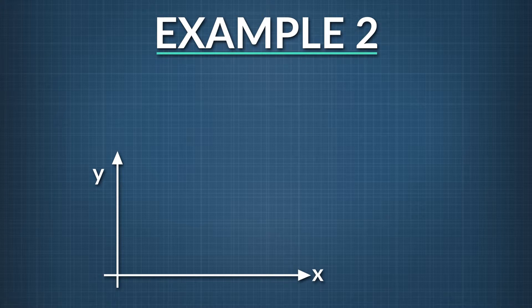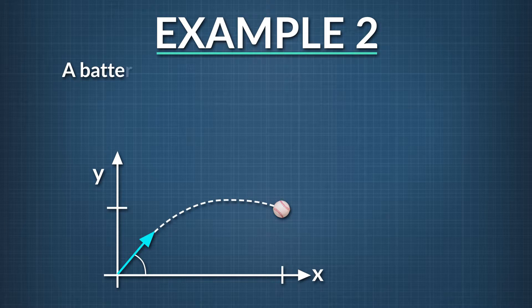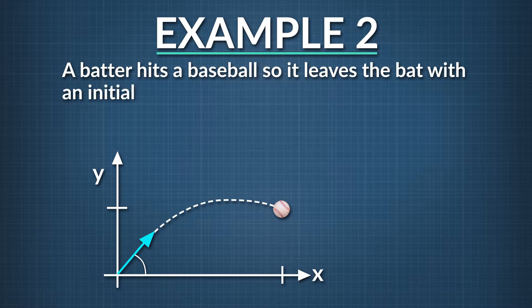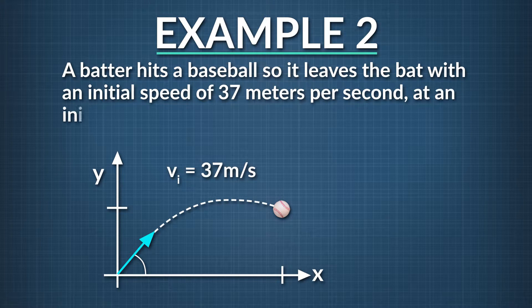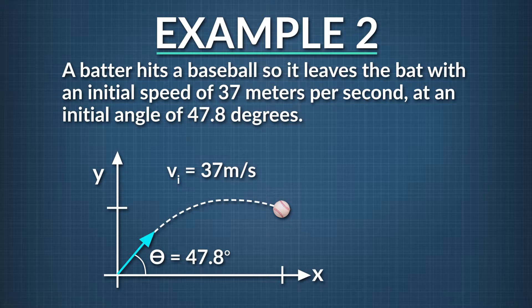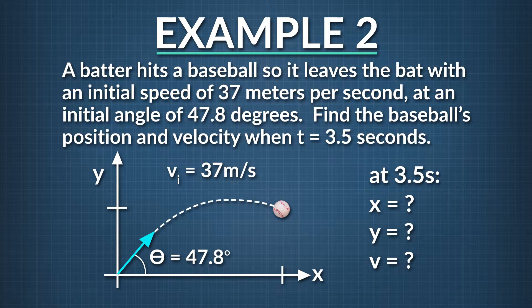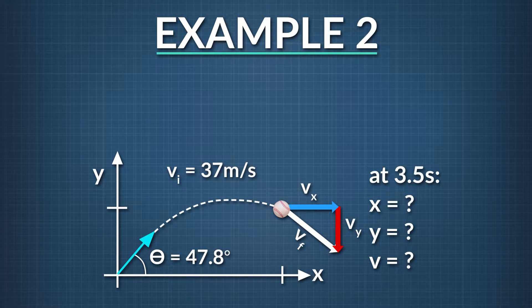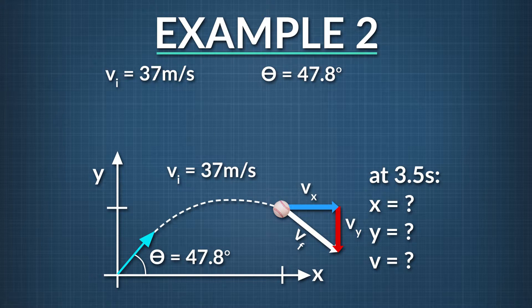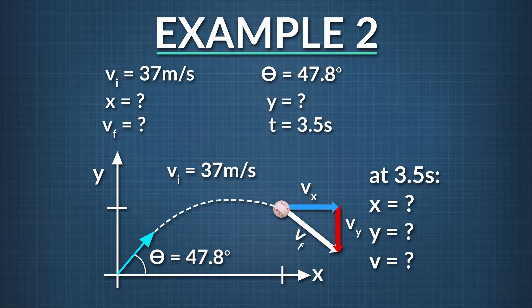The next problem involves solving for the position and velocity of the projectile after it has traveled for several seconds. A batter hits a baseball so it leaves the bat with an initial speed of 37 meters per second and at an initial angle of 47.8 degrees. Find the baseball position and velocity when t equals 3.5 seconds. As always with projectile motion problems, we write down what we're given and what to solve for. We know the initial speed of the baseball, 37 meters per second, and it left the bat at an angle of 47.8 degrees. We want to know the ball's position and velocity after t equals 3.5 seconds.